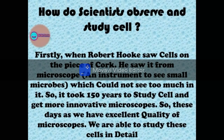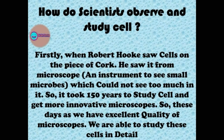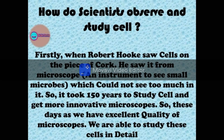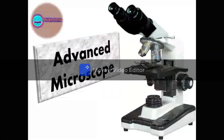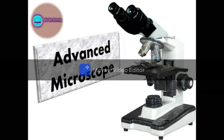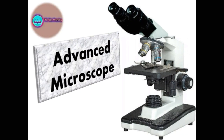After Robert Hooke's observation, for 150 years, no research was done on cells because improved microscopes were not available. Cells of living organisms were observed only after the discovery of improved microscopes having high magnification. Not all cells are visible to the naked eye — you need an instrument like a microscope to see the cell.